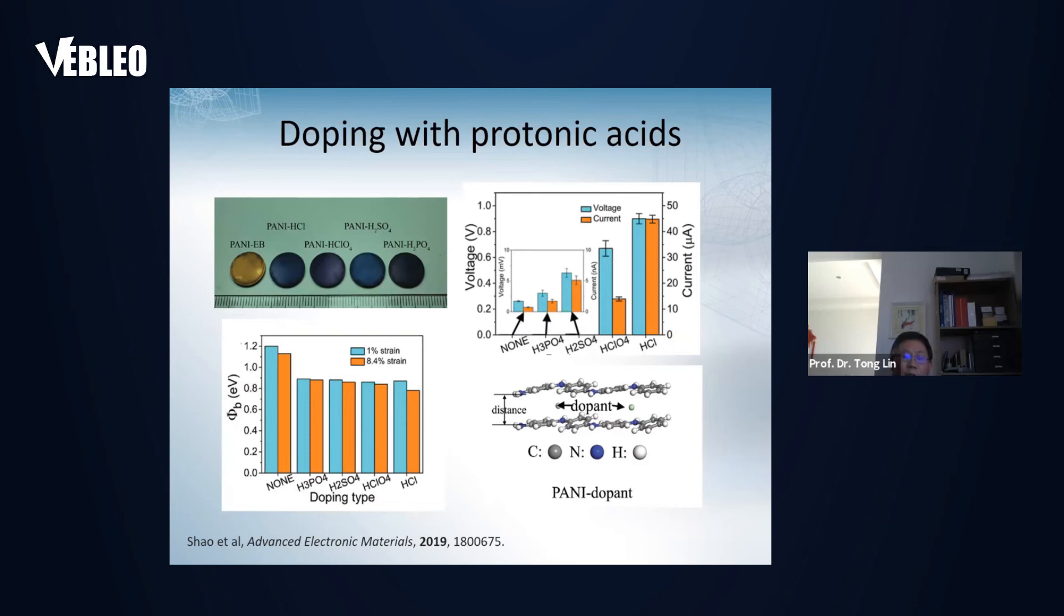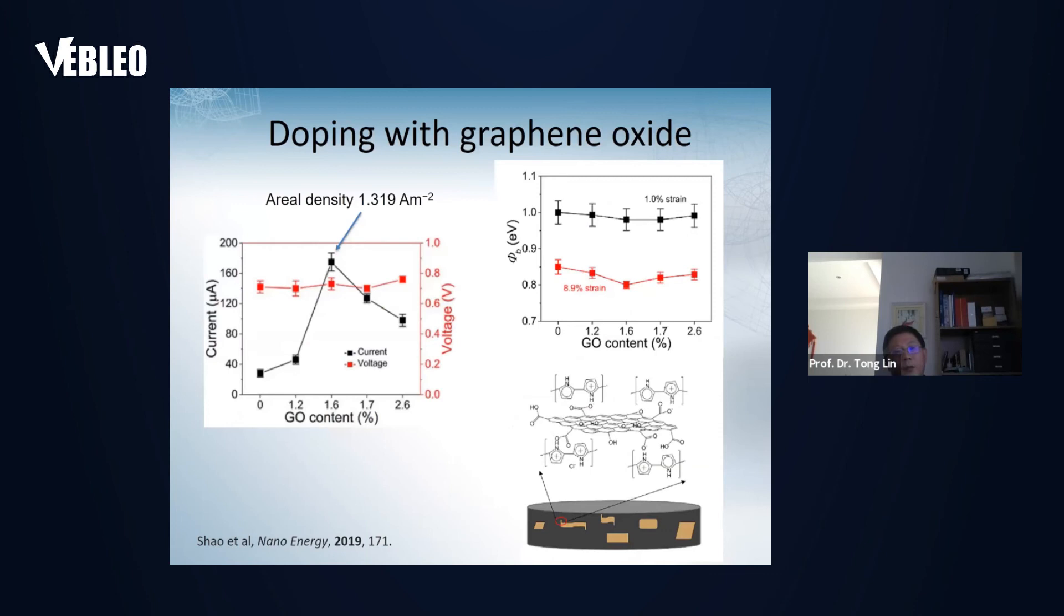Using polyaniline, we also understand how the dopant influences the energy generation efficiency. By doping and de-doping a single disc, we found the doping type influences the output. The one with the smallest molecular size leads to the highest energy generation. The reason for this is because the smallest doping leads to higher improvement in the conductivity and also leads to larger reduction in the barrier height during compression.